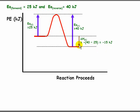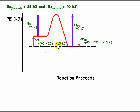For delta H reverse, we are going from the products up to the reactants, so it would be positive 15 kilojoules. The difference is 15, and since we are going up, it is positive.